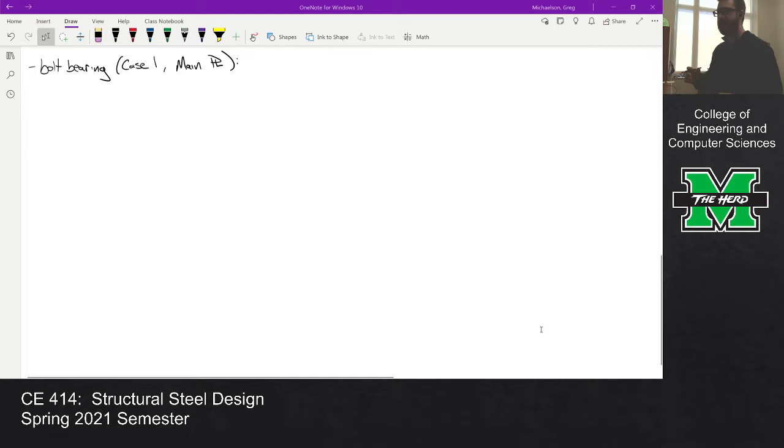So let's go through and do a bolt bearing computation with our main plate, case one. I'll list out our parameters again. We have a bolt spacing of 2.75 inches, edge distance of 1.5 inches, plate thickness is a half inch, and Fu is 58 ksi because we're dealing with A36 steel.